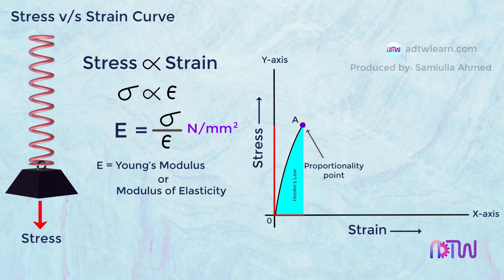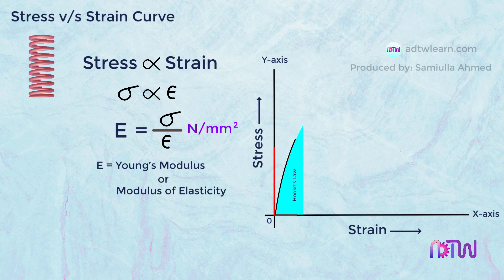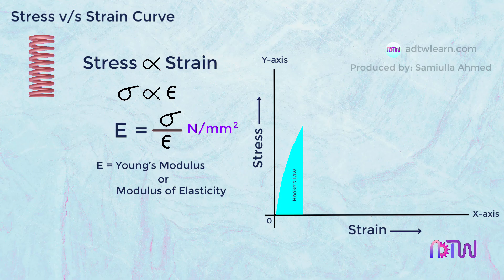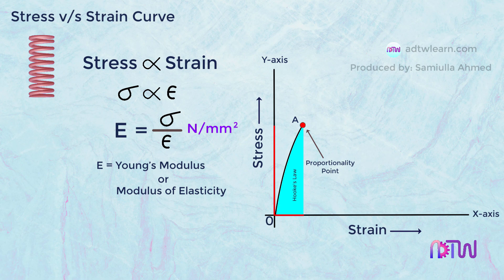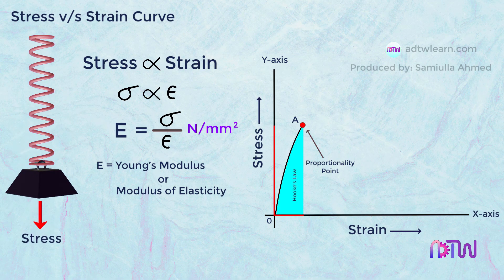If we remove stress at this point, the body comes back to its original shape. It means this region is an elastic region of the body. Within this region, 0 to A, a body behaves like an elastic.